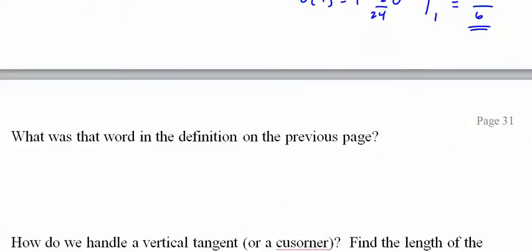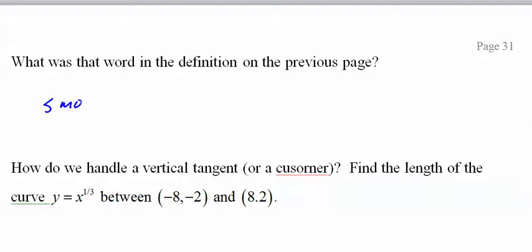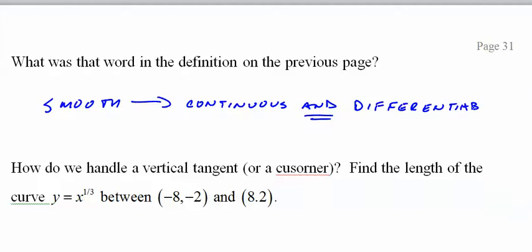It's done differently elsewhere. What was that word on the previous page? Smooth. Smooth. It means it's continuous and differentiable on the interval on the curve. Because something may not be differentiable. The curve may have an asymptote or something like that. It's like no big deal because we're just taking a chunk where it is.